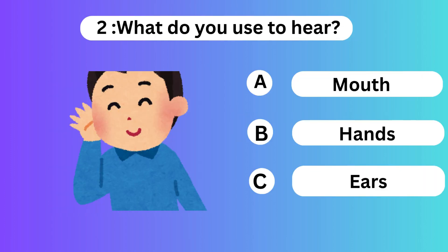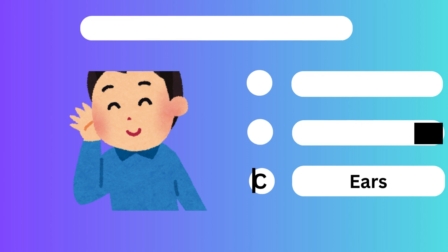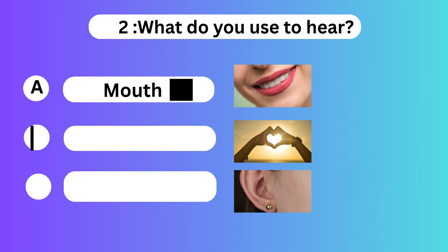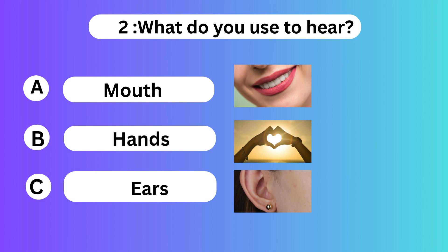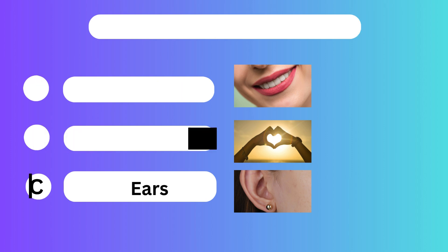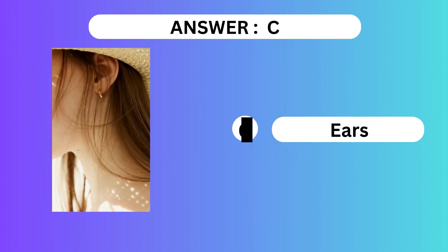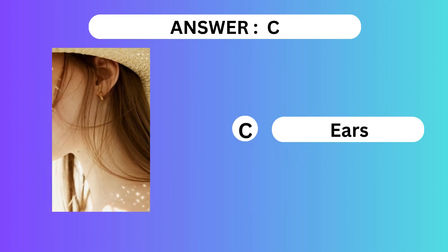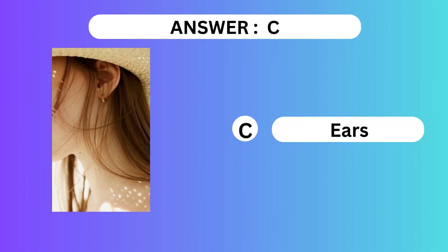Question 2. What do you use to hear? A. Mouth. B. Hands. C. Ears. Answer is C. Ears.